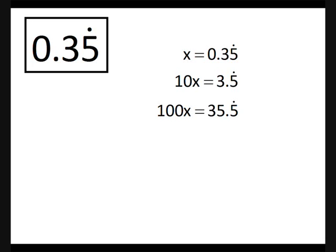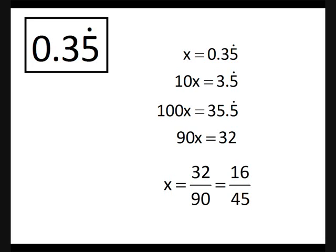Now notice that both 10x and 100x have the same decimal — just 5 repeating. So we subtract 10x from 100x, we get 90x. And 35.5555... take away 3.5555... is 32. Dividing 32 by 90, we get x equals 16/45.